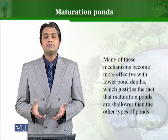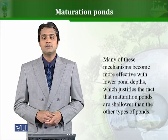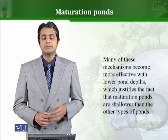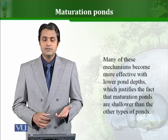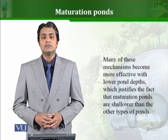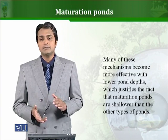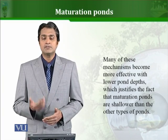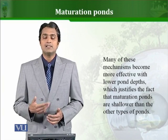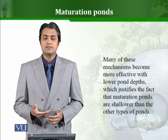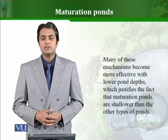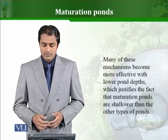Many of these mechanisms and parameters used to kill bacteria and microorganisms — for example pH, temperature, and so many other things — operate best if the ponds are shallower. If the depth of the ponds is less, those parameters operate better and the killing of microorganisms, bacteria, and pathogens can happen more effectively. That is why maturation ponds are much shallower, so that much higher efficiency can be achieved.